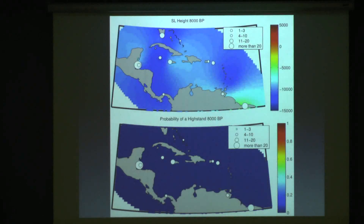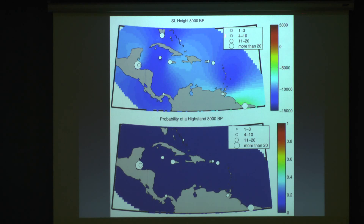We can go a little bit further and start to look at these differences in sea level by application of the Gaussian Process Model that I talked about on the previous slide. These are spatial plots shown here, going back in 1,500-year time steps, where on the top you have the height of sea level — zero is present, and the units are in millimeters, so we can think of this as negative 5 meters, negative 10 meters, negative 15 meters. This plot shows the number of index points or data points at each region during that time period. And then on the bottom, we have the probability of a high stand — that's the probability of sea level higher than present — where blue is 0% probability and red is 100%.